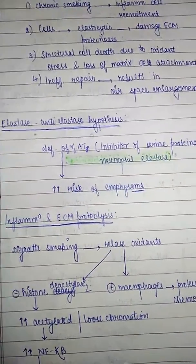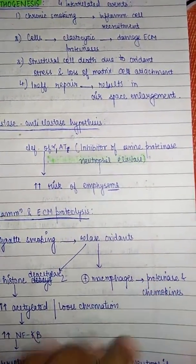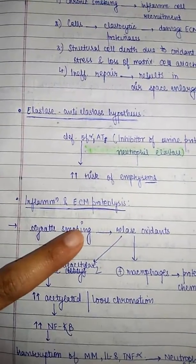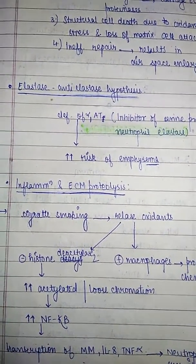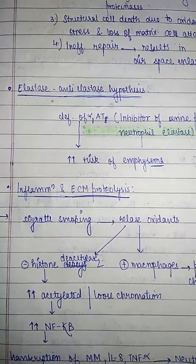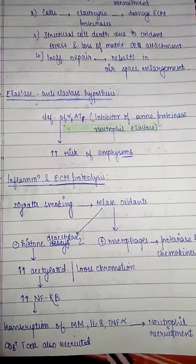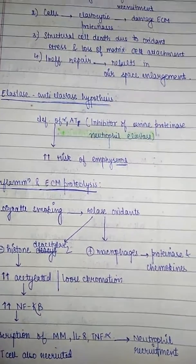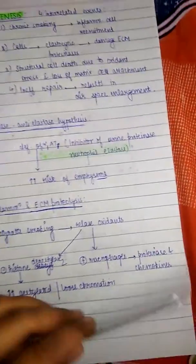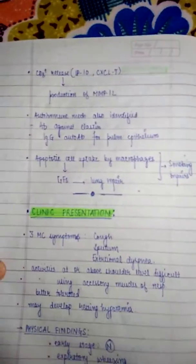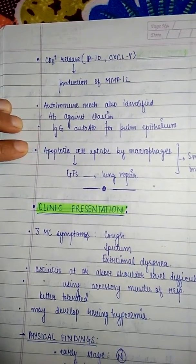During cigarette smoking, oxidants are released which activate macrophages; proteinases and chemokines are released. The oxidants inactivate histone deacetylase 2, increasing loose chromatin, which increases NF-κB. Transcription of matrix metalloproteinases, interleukin-8, and tumor necrosis factor alpha occurs, leading to neutrophil recruitment. CD8-positive T cells are also recruited.